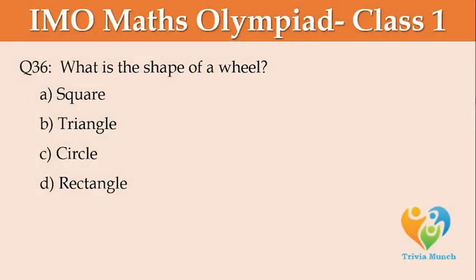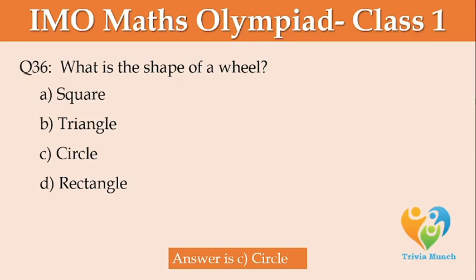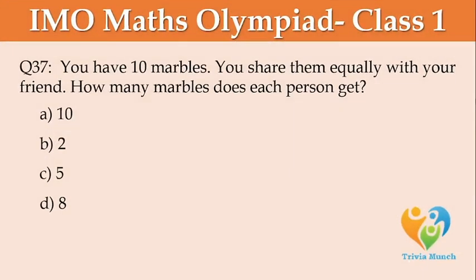What is the same shape as a wheel? Option A: Square, Option B: Triangle, Option C: Circle, Option D: Rectangle. You have 10 marbles. You share them equally with your friend. How many marbles does each person get? Option A: 10, Option B: 2, Option C: 5, Option D: 8.